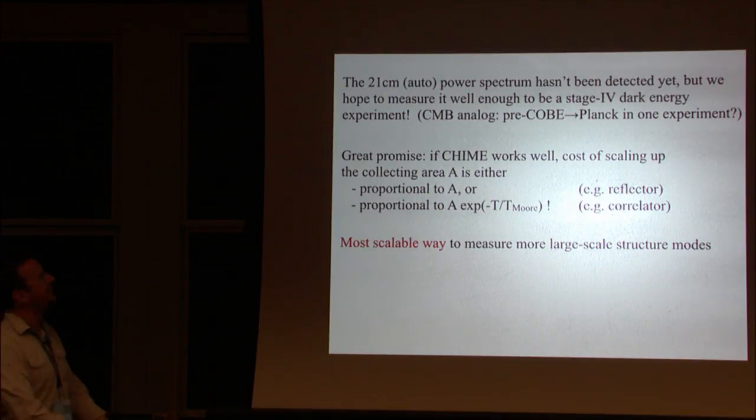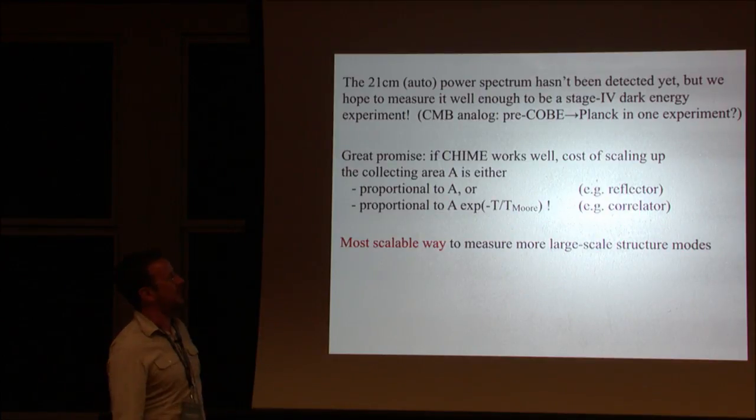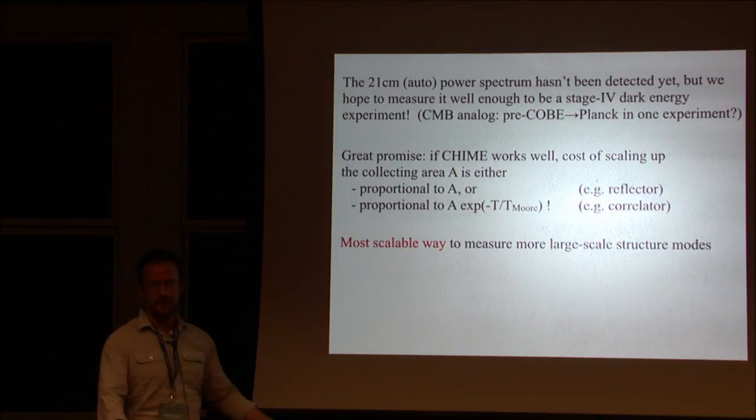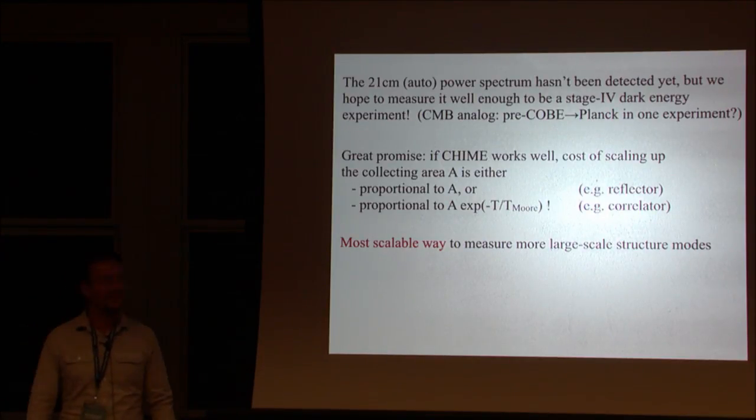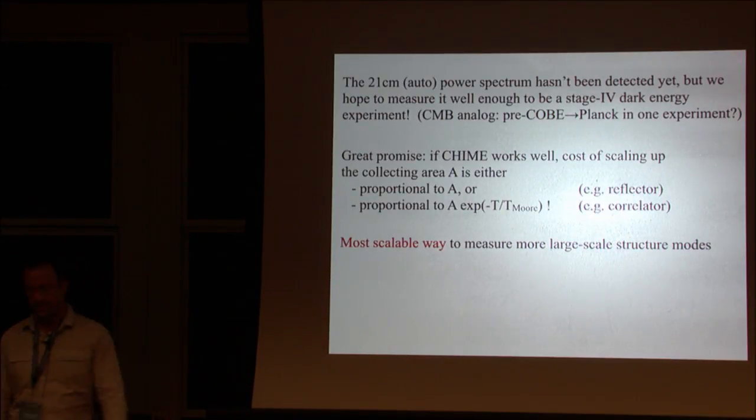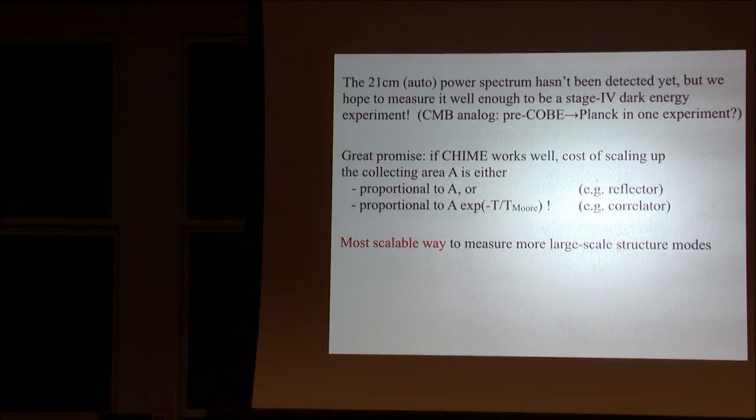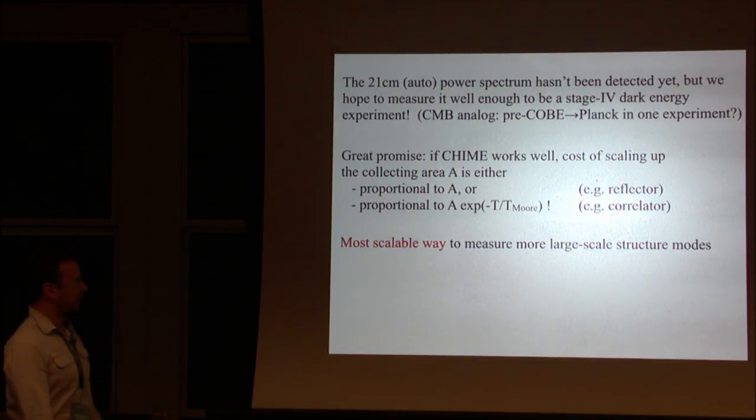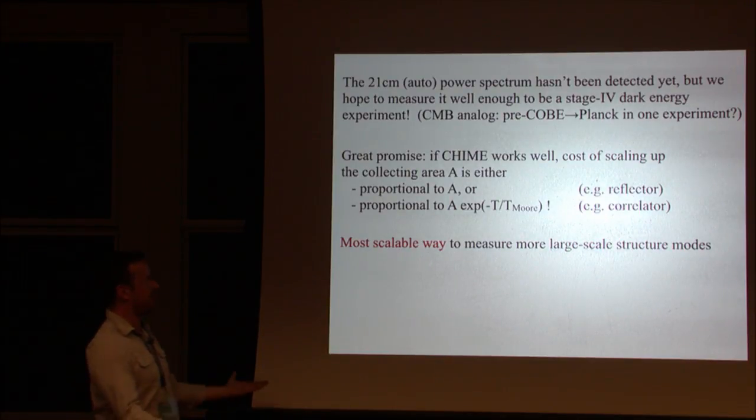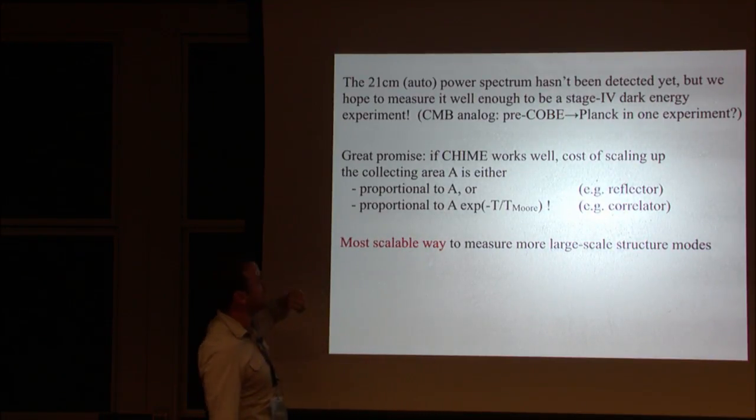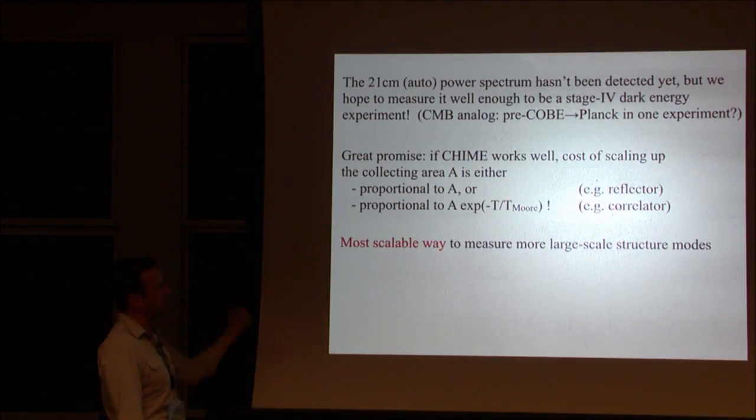It's just recently become possible to build this sort of instrument. I would like to emphasize that the 21 centimeter cosmological power spectrum in autocorrelation hasn't been detected yet. So in that sense, the field is in its infancy. It's like the CMB pre-COBE. But we're hoping to go all the way to a stage four dark energy experiment with CHIME. So it's sort of like if the CMB went from pre-COBE to Planck in one experiment. That's just because of Moore's Law. Moore's Law suddenly catches up and you can build this huge thing.